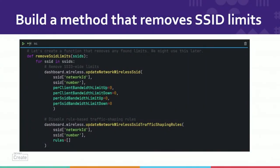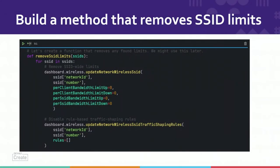Now let's build a method that resolves SSID limits. To remove them, we need to modify the parameters per_client_bandwidth_limit_up, per_client_bandwidth_limit_down, ssid_bandwidth_limit_up, and ssid_bandwidth_limit_down. Using the update_network_wireless_ssid method — highlighted in yellow — we will set all the bandwidth limits to zero, where zero equals unlimited. Separately, we will remove any custom traffic shaping rules using the update_network_wireless_ssid_traffic_shaping_rules method. Rather than running these operations directly on the dataset, we've built a function that we can call later when we want to, and the argument it accepts is a list of SSIDs. This makes our code more reusable.